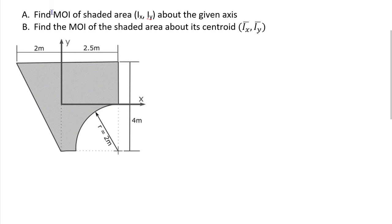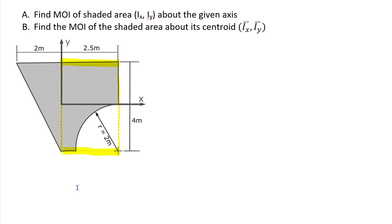Here is the example problem. We'll first find the area moments of inertia Ix and Iy about the given axes — here's the x-axis and here's the y-axis. Next, we'll find the moment of inertia of the shaded area about its own centroid. There are two ways to do that, one shorter than the other. The first step is to carve the shape into parts. I've chosen three: a positive rectangle (shape 1), a triangle to the left of the rectangle (shape 2), and a cutout quarter circle of 2-meter radius (shape 3).